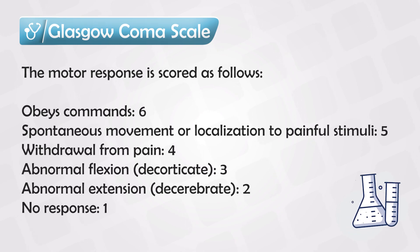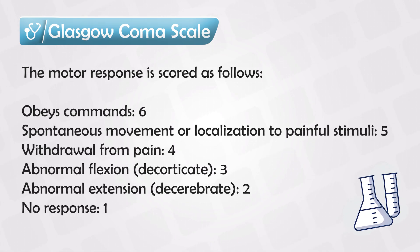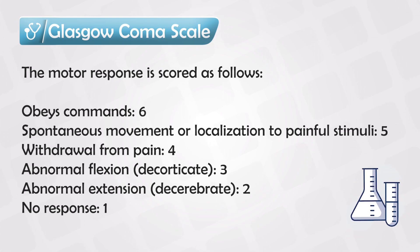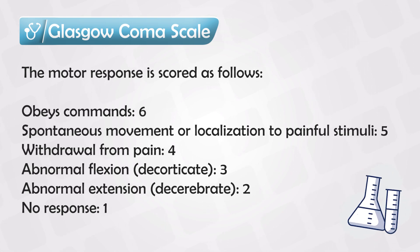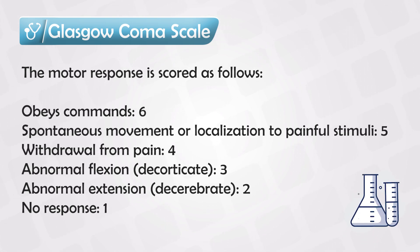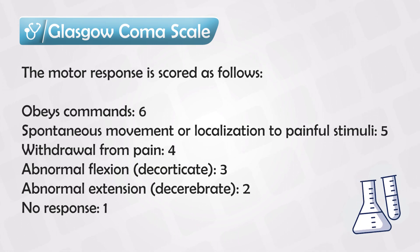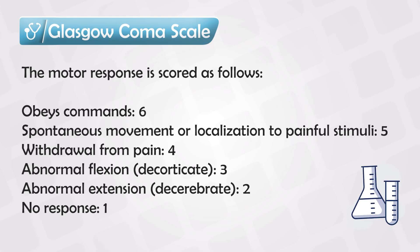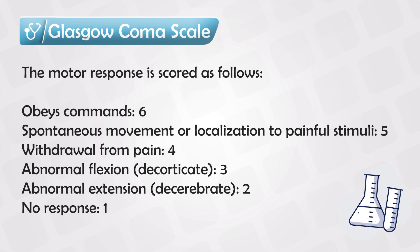In the motor testing, the patient gets six points if they can obey commands like lifting their arm or clapping their hands, five points if they can move their limbs to localize the pain, four points if they withdraw from the pain, three points if they have abnormal flexion which is a sign of decortication, two points if they have abnormal extension which is a sign of decerebration, and one point if they have no response.